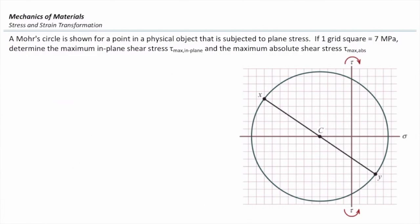Let me ask a quick question about this Mohr's circle. Can you tell me how much the maximum absolute shear stress and the maximum in-plane shear stress are from this figure? First, should I expect different absolute and in-plane values, or are they the same? They are the same, because one principal stress is negative and the other is positive — opposite signs. So both values equal the radius of this circle. Each grid counts for 7 megapascal. The radius is approximately 8.5 grid units, so 8.5 × 7 is close to 60 megapascal.